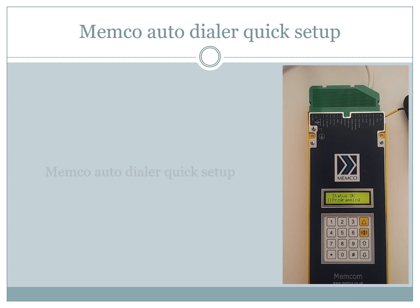This is a memcom autodialer unit used for lift emergency calls. I'll present a method for a quick setup of it. Let's say that this unit was just installed, or it was previously installed and we just want to change the phone numbers. This is how the memcom display should look like if it's correctly wired.